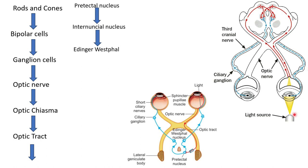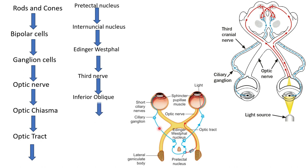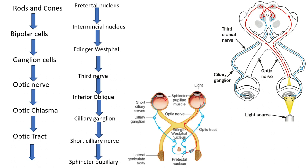The pre-tectal nucleus connects to the Edinger-Westphal nucleus on the same side through the peri-aqueductal gray, and to the opposite side through the posterior commissure. From the Edinger-Westphal nucleus, signals travel via the third nerve, which innervates the inferior oblique, and from there the innervation goes to the ciliary ganglion. From the ciliary ganglion to the short ciliary nerves, and finally the short ciliary nerves innervate the sphincter pupillary muscle in the iris, causing the pupil to constrict.